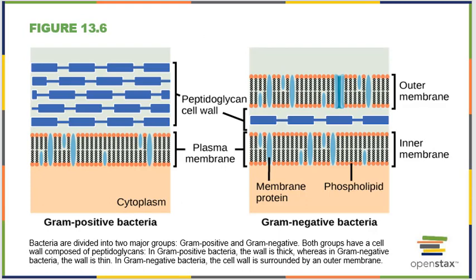To clarify gram positive versus gram negative: gram positive bacteria pick up a gram stain and have a nice thick layer of peptidoglycan outside their plasma membrane. Gram negative bacteria have an inner membrane, a peptidoglycan layer, and then an outer membrane.